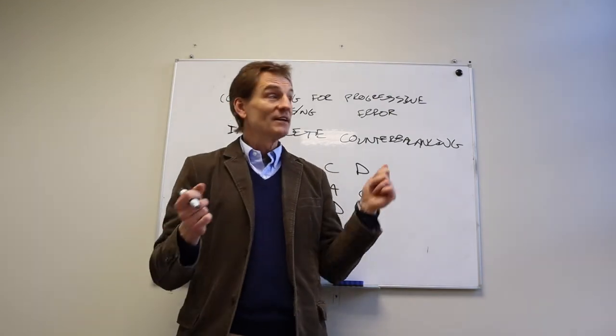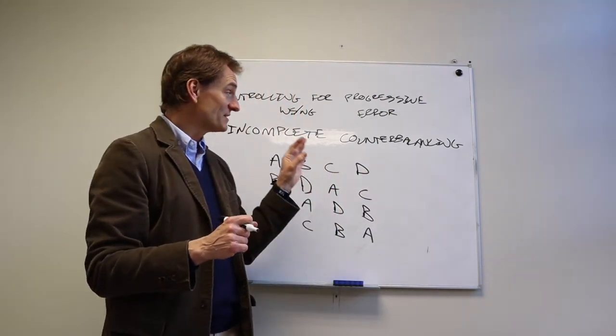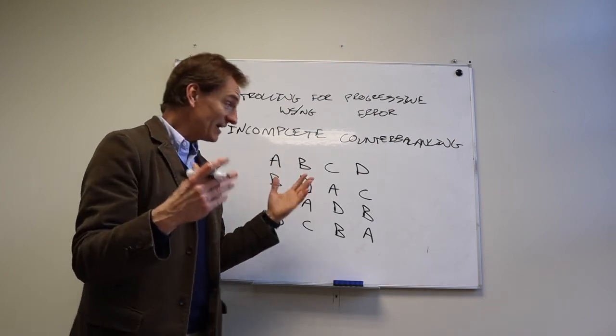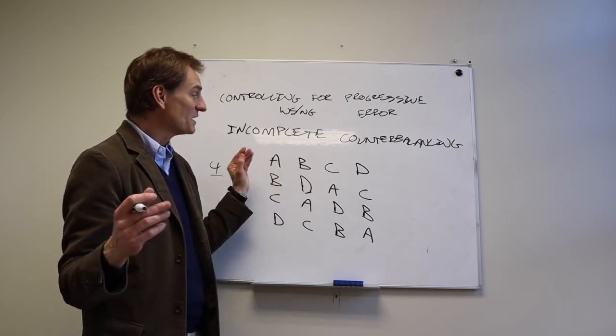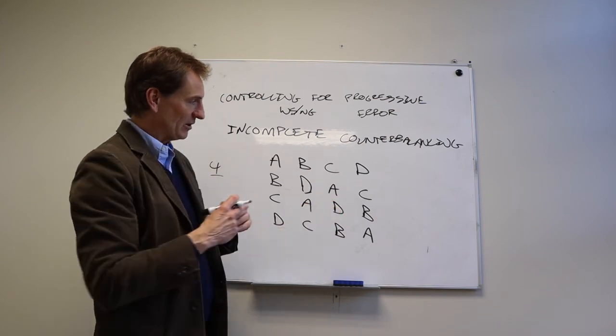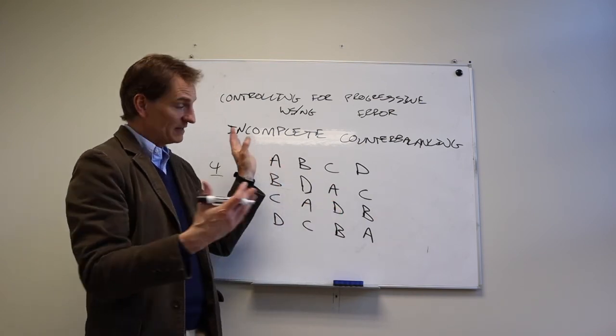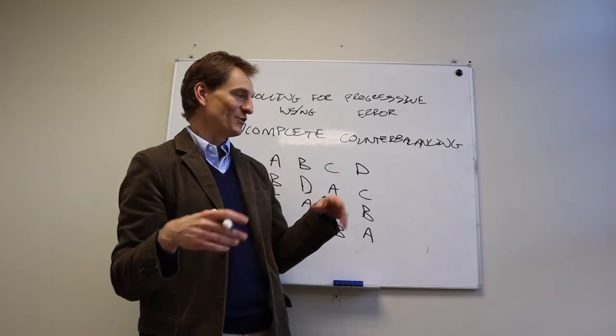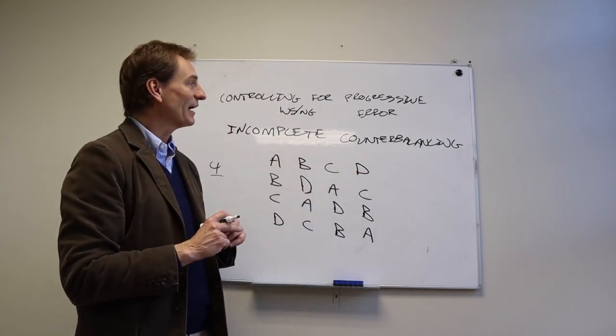One last point. The science that this incomplete counterbalancing comes from is ag science, agricultural science. Because they plant different seeds in different parts of the field, and that way they account for different drainage and different sun and everything else. I don't know if they still use that, but that's where it came from.